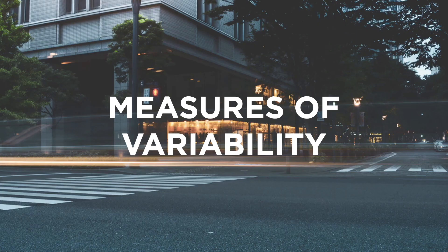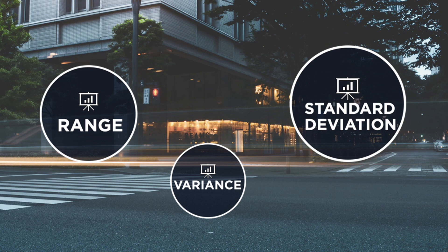This is where the next measure takes place. We have what we call measures of variation. Although these measures don't determine which is better, they determine the consistency of how spread out the data set is. There are three measures of variation: range, variance, and standard deviation.